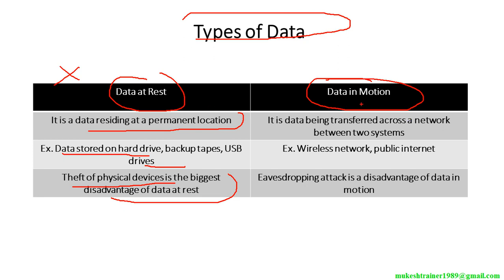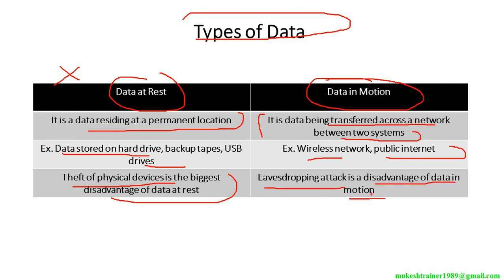Data in motion is data being transferred across the network between two or multiple systems communicating with each other. The data is always in the network or on the wires — for example, a wireless network or the public internet. The disadvantage here is eavesdropping attacks. It is easy these days to hack or crack a wireless device with poor authentication or a poor password.